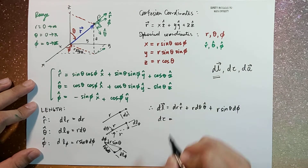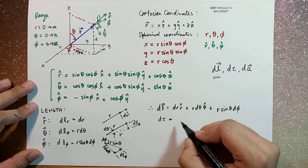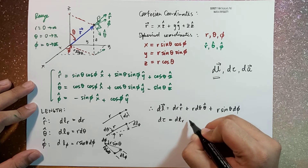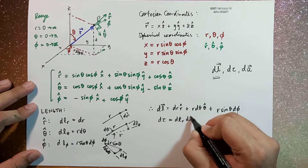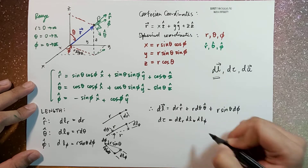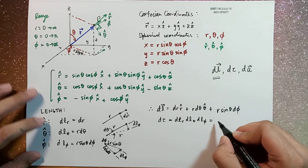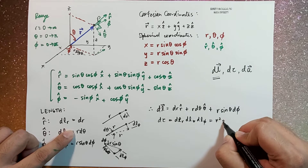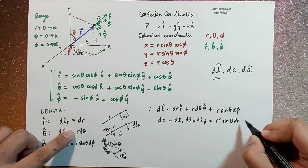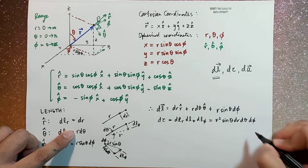The volume element d-tau, on the other hand, is the product of dl_r, dl_theta, and dl_phi. This is equal to r squared sin-theta dr d-theta d-phi.